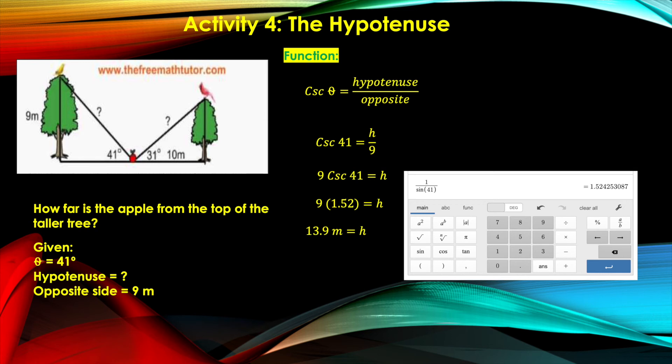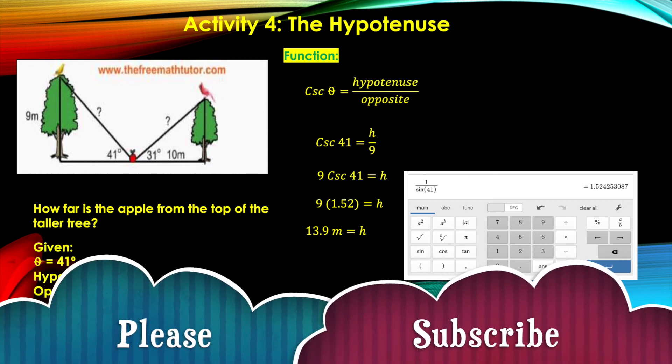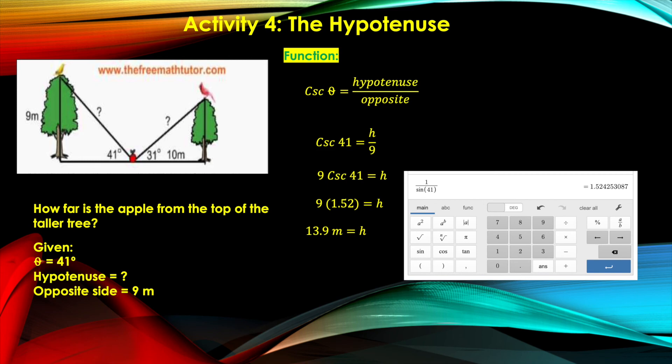This means that the apple is 13.9 meters from the top of the taller tree. So the distance between these two points is 13.9 meters.